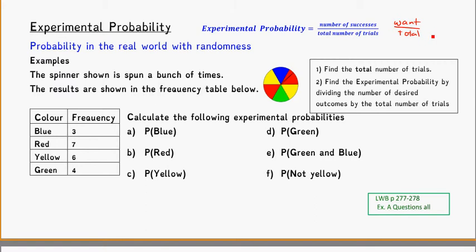So as an example here, I've got a spinner shown. You can see here, it's a wheel that you spin around and there's a little arrow. Spin the arrow and it sees what color you stop on. And we spin it around a bunch of times and we keep track of all the results here, shown in the frequency table.